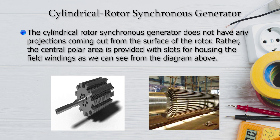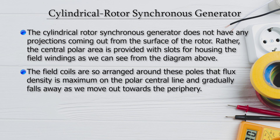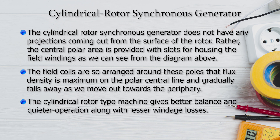The inter-polar area is provided with slots for housing the field windings. The field coils are arranged around the poles so that flux density is maximum on the polar central line and gradually falls away toward the periphery. The cylindrical rotor type machine gives better balance and quieter, noise-free operation with lesser windage losses. These windage losses are due to air friction — with a smooth surface and nothing projected out, wind resistance decreases and losses decrease.